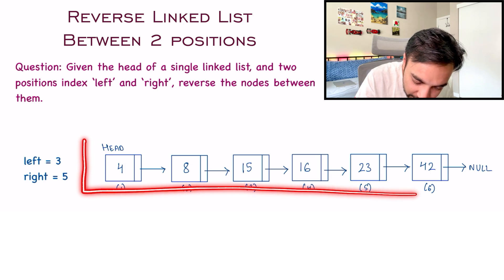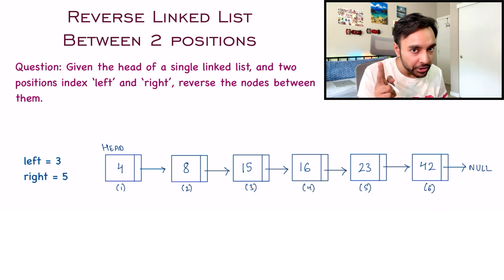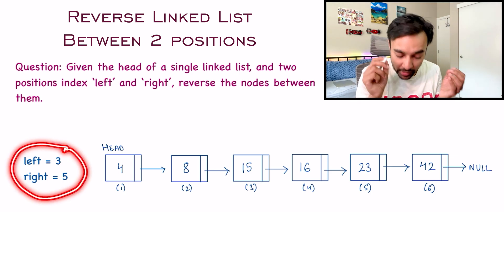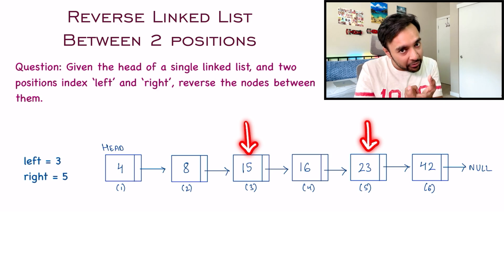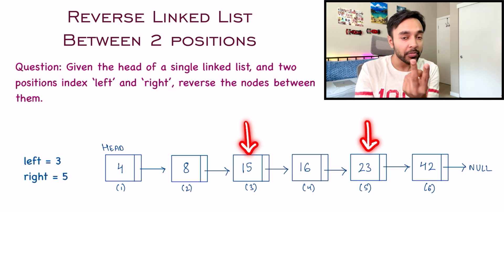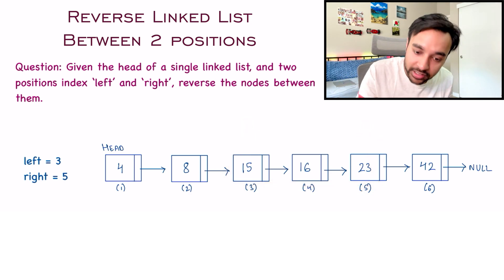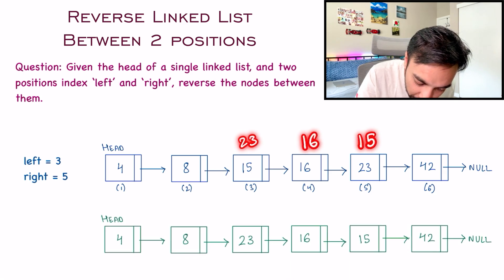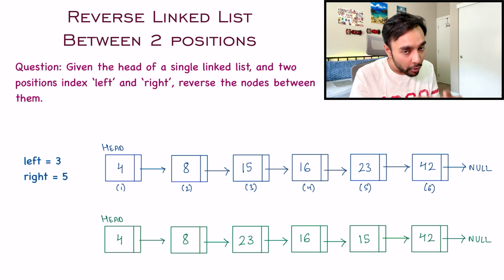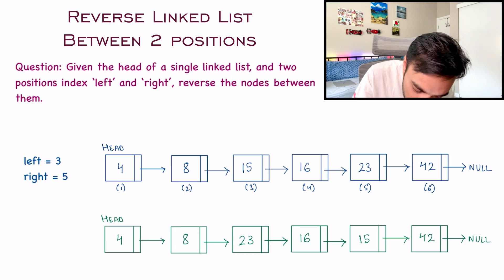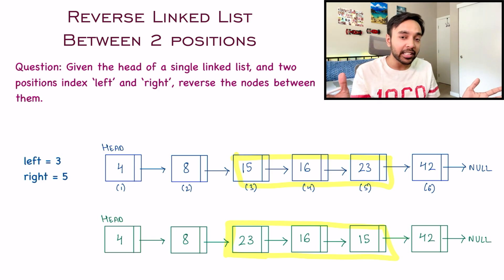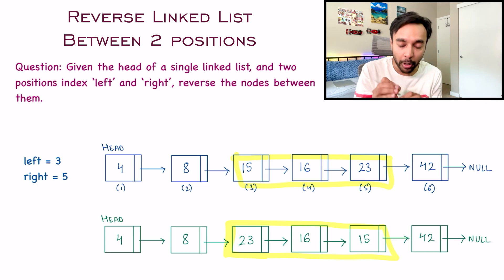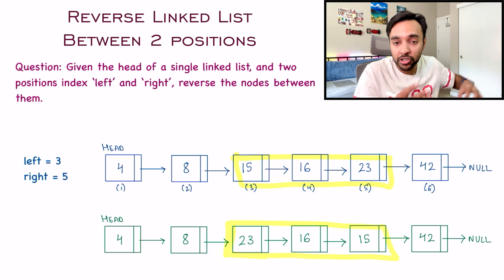In this test case, you are given the head of a linked list defined like this. And you are given two position indexes: left equals three and right equals five. So this means you only have to reverse the sublist between these two indexes. So only this portion will get reversed — 23 should come first, then 16, then 15. This is the reversed order and this list will be your answer. All other elements of the linked list remain in the same order. It is desired that you do all of this in place, without using any additional data structure.